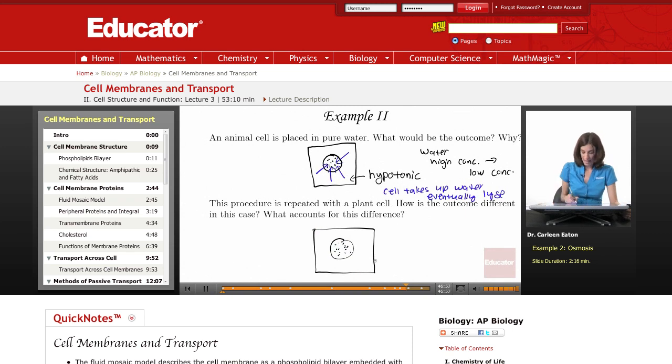Again, I have a hypotonic environment, but now I have a plant cell. And recall that an important difference between a plant and an animal cell is the presence of the cell wall.